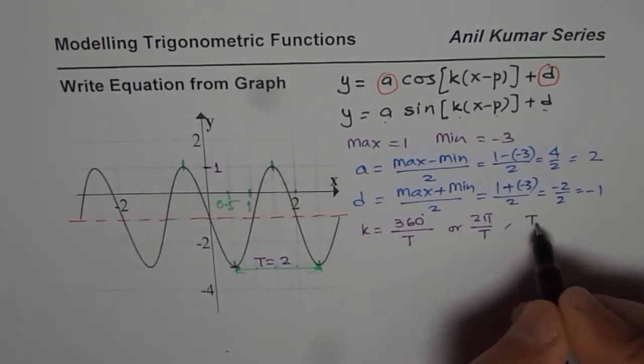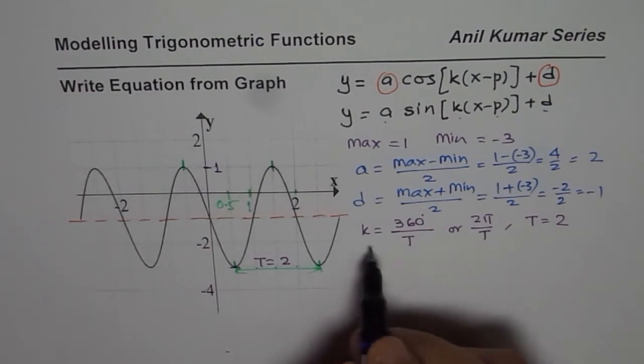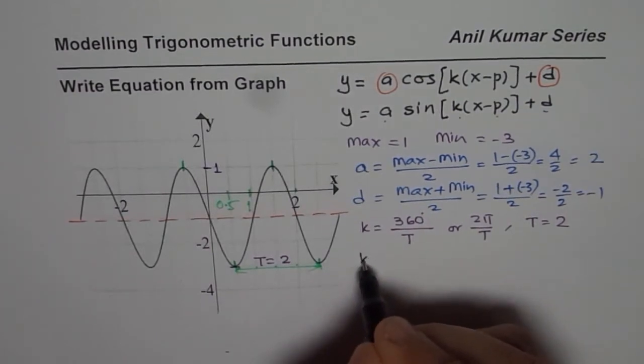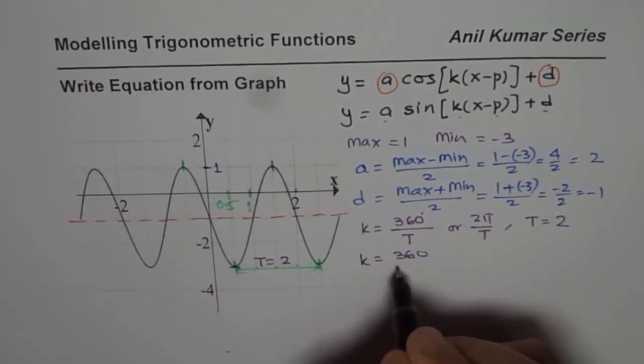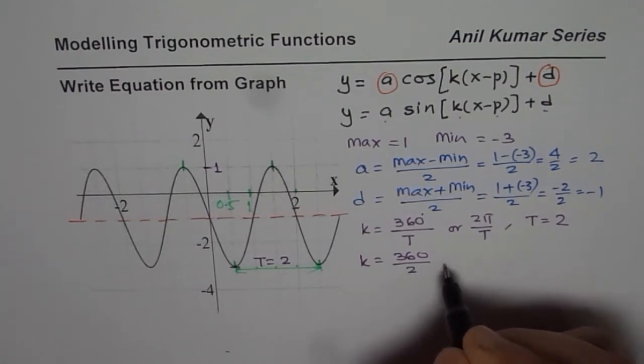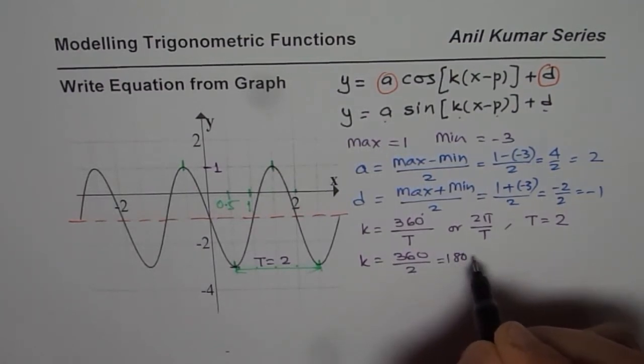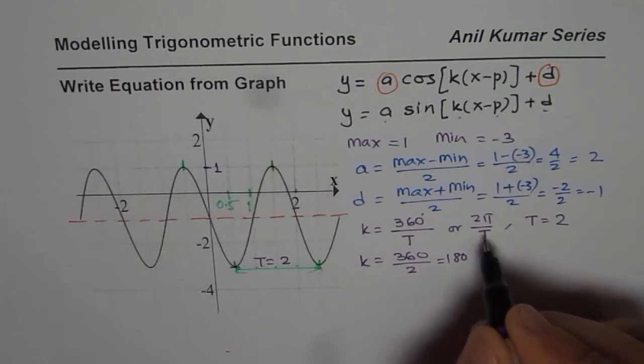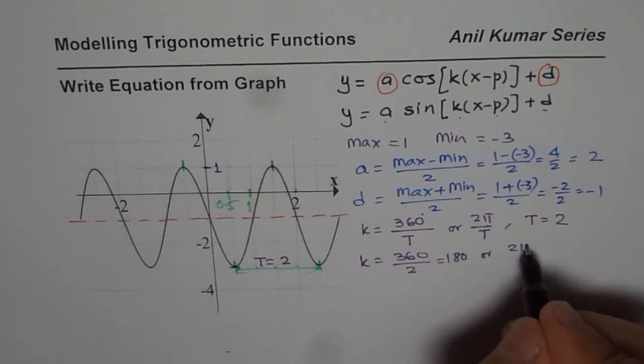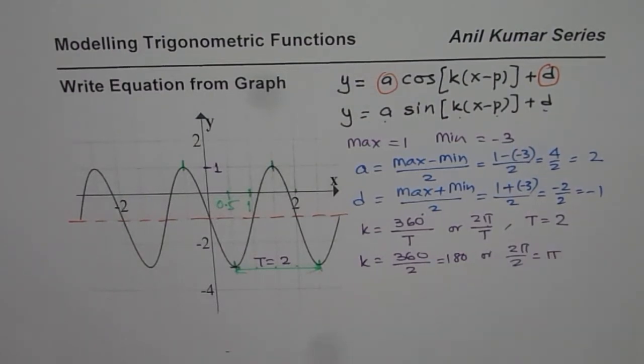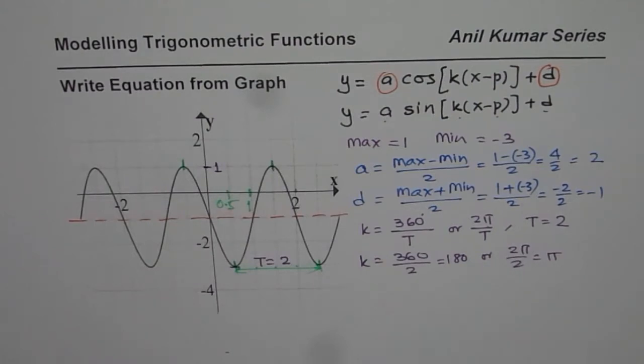Now we know T equals 2. Since we know T we can always find k. So k will be equal to 360 divided by 2, which is 180. Or if you are doing it in radians it will be 2π divided by 2, which gives you π as the k value. So we get the k value.